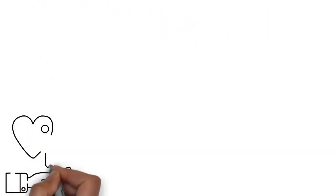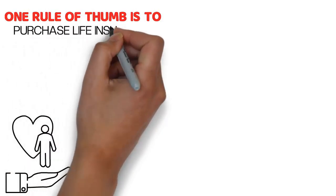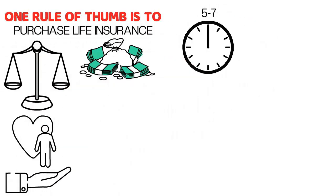When considering life insurance, one rule of thumb is to purchase life insurance that is equal to 5 to 7 times your annual gross income.